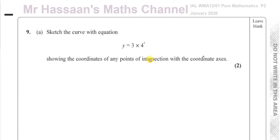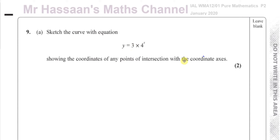Welcome back to Mr. Hassan's Maths Channel. In this video, I'm going to go through question number 9 from January 2020, Pure Mathematics P2, International A-Level, Edexcel paper. This question is about an exponential curve. It says: sketch the curve with equation y equals 3 times 4 to the power of x, showing the coordinates of any points of intersection with the coordinate axes.